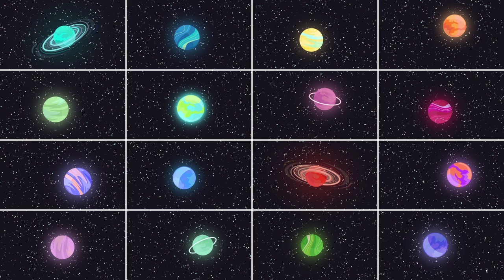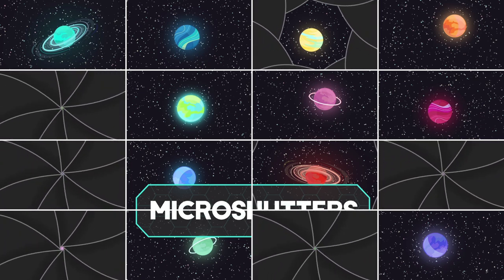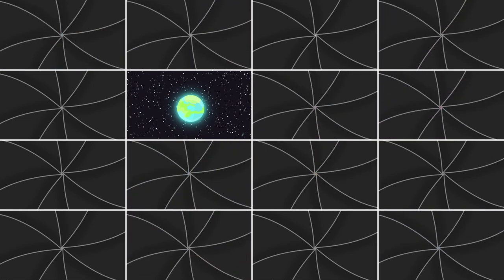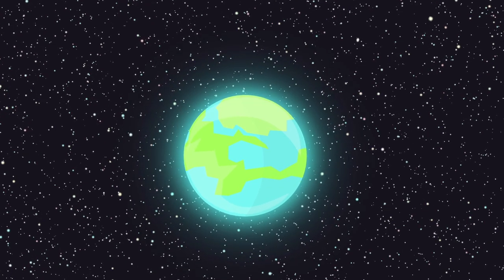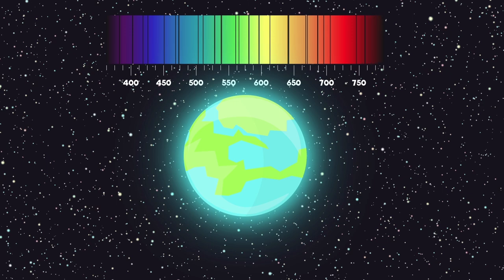JWST is able to observe so many objects at once using an incredible brand-new technology called micro-shutters, tiny windows with shutters that measure 100 by 200 microns, the same size as a few human hairs. A closed shutter blocks unwanted light from objects researchers don't want to observe. Because of this, the Space Telescope will be able to focus on very distant galaxies. It will split the light of these galaxies, planets, and stars into spectra, and separate the light into components, which will tell scientists what they are made of.